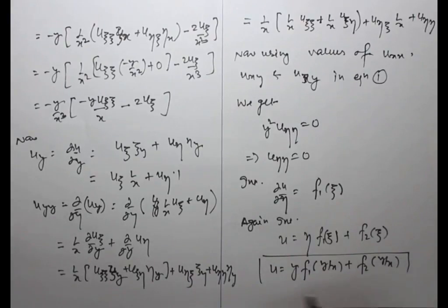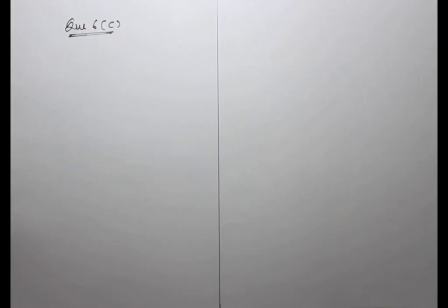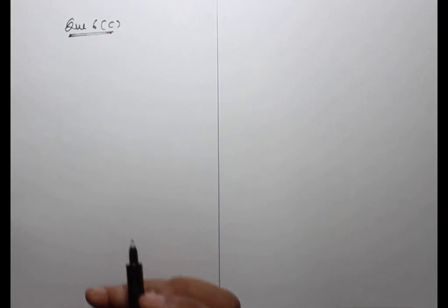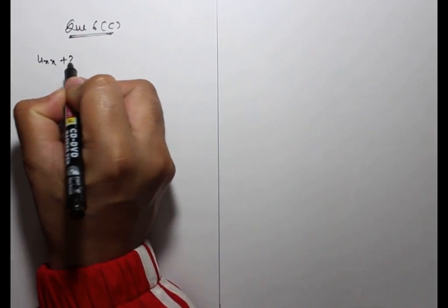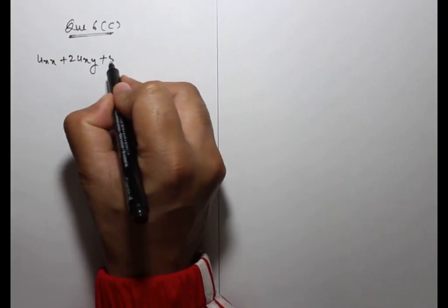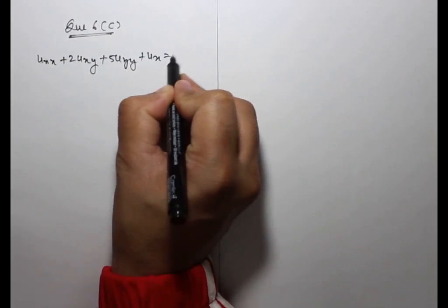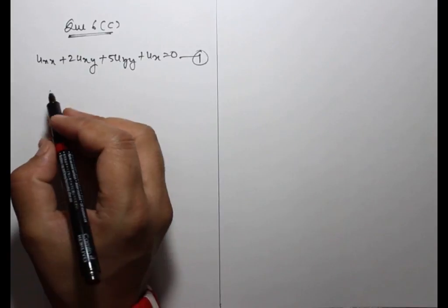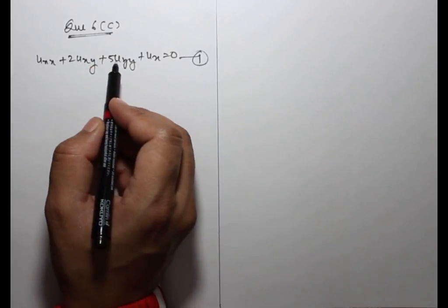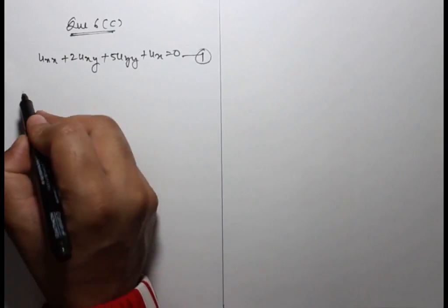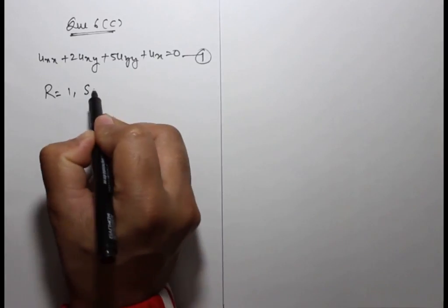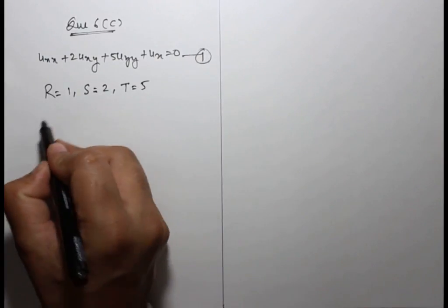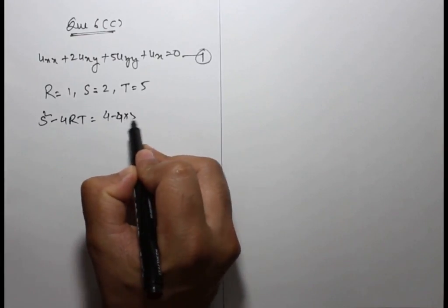Question 6 part C: reduce the following PDE with constant coefficients into canonical form: uxx plus 2uxy plus 5uyy plus ux equals 0. This is equation 1. This problem is similar to part B but the coefficients here are constants.